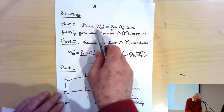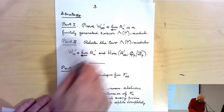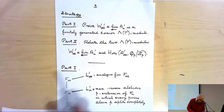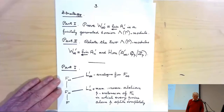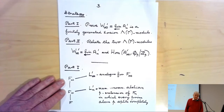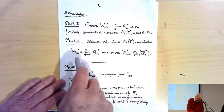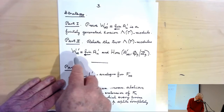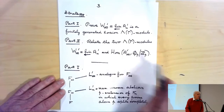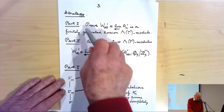The approach is to use this other module W∞', which is the projective limit of the An' primes. It's by studying this module, and eventually the connection between the two, that we prove the theorem. The argument now breaks up into two parts: firstly, we're going to show that W∞' is a finitely generated torsion λΓ-module; and secondly, we will show that there is a simple relationship between W∞' and Z∞'.